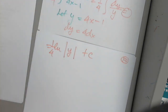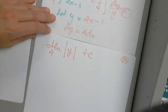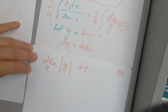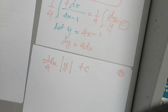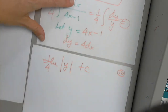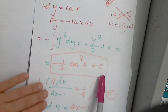Good, but not good enough, because I have to go back to the original variable. All indefinite integrals have a result that is a family of functions, not just one function. The C is what changes — that's how we get the family of functions.